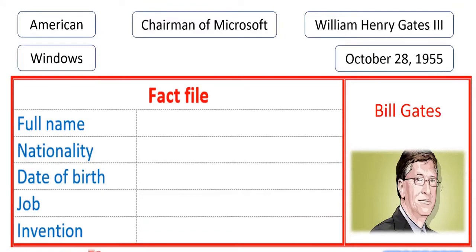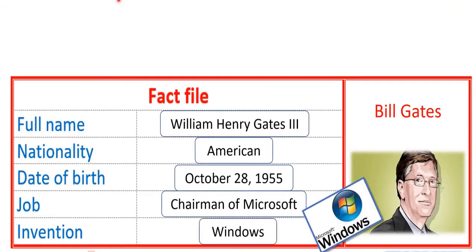Here is the fact file of Bill Gates. Pause the video and put the facts in the correct place. Let's see the answer: full name — William Henry Gates III; nationality — American; date of birth — October 28, 1955; job — Chairman of Microsoft; invention — Windows, the system which operates computers.